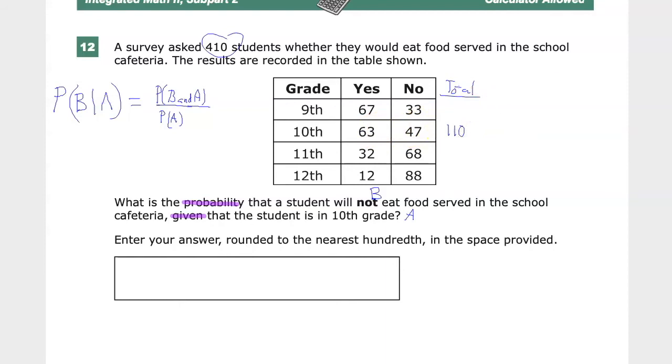Now I need to find out what's the probability of this happening, so that's going to be 110 divided by 410, and that's going to give me the probability of A that I'm looking for.